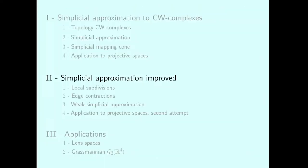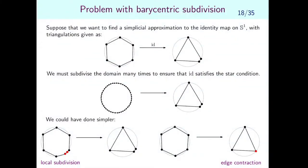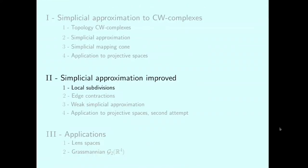The bottleneck is the simplicial approximation. Consider finding the simplicial approximation of the identity between two triangulations of the circle: two nearby points in the codomain force many global subdivisions of the domain, when a local subdivision would suffice. Alternatively, we could simplify the codomain by contracting a small edge.